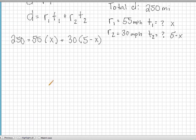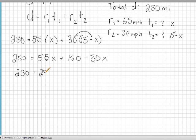Now we're just solving an algebra equation. So let's go ahead and simplify the right hand side by distributing this 30. So 30 times 5 is 150, 30 times negative X would be negative 30X. Let's go ahead and add like terms on the right hand side. 55X minus 30X leaves us with 25X.